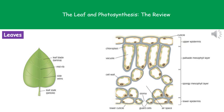In our lower epidermis at the bottom, you can see a structure called the stoma, or stomata. On each side of the stoma you've got these specialized cells called guard cells.